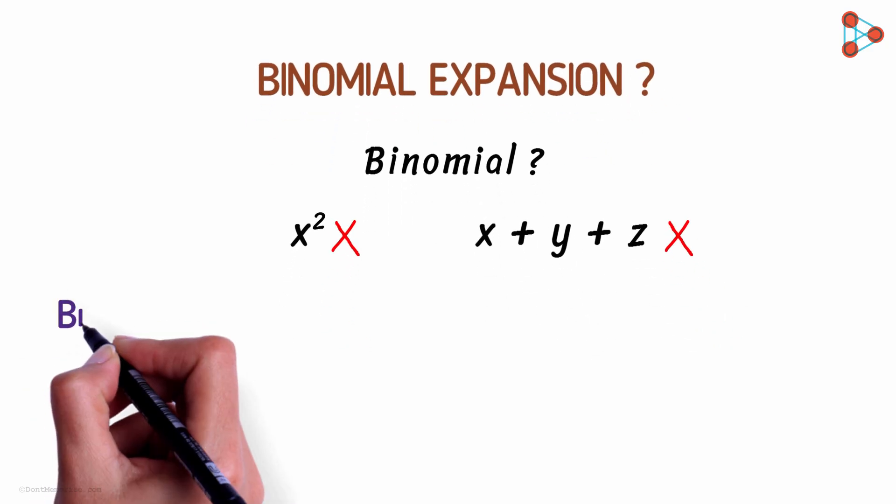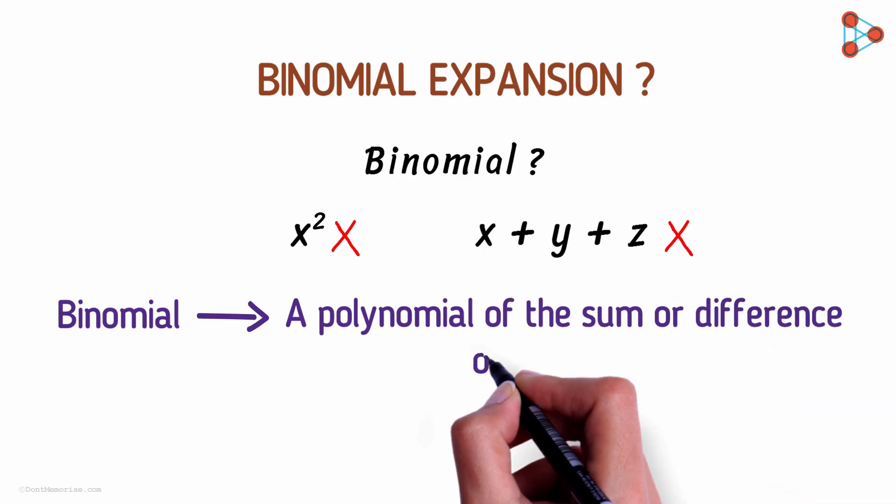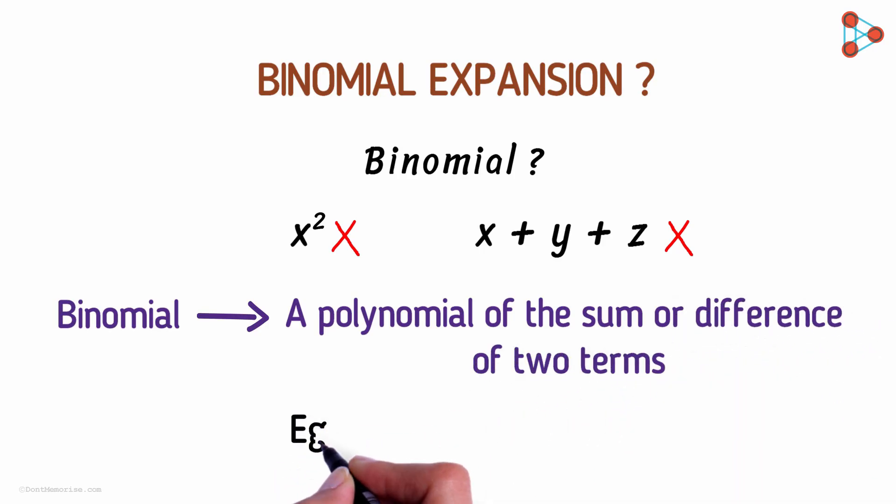In simple words, a binomial is a polynomial which is a sum or difference of only two terms. For example, say x plus y squared or x squared plus y cubed. Are they binomials? Yes, you're right. They are, because they consist of only two terms.